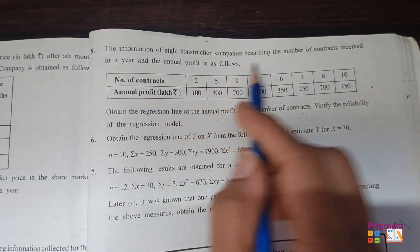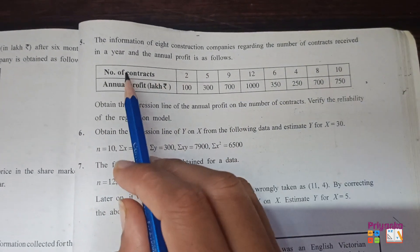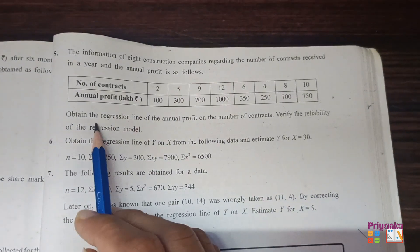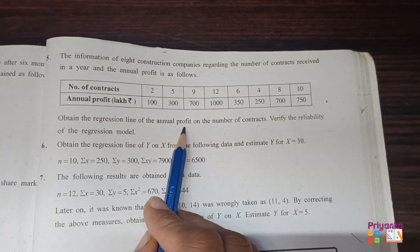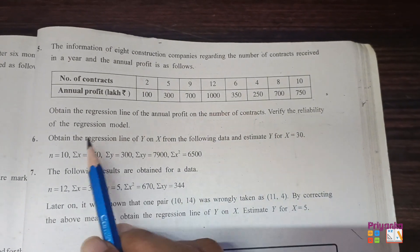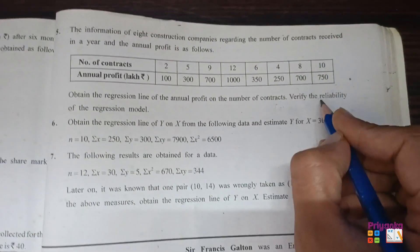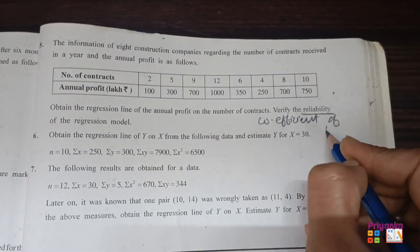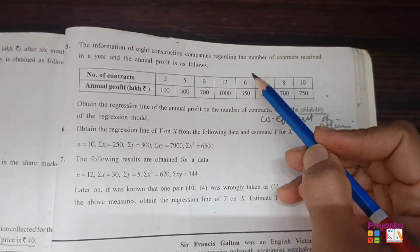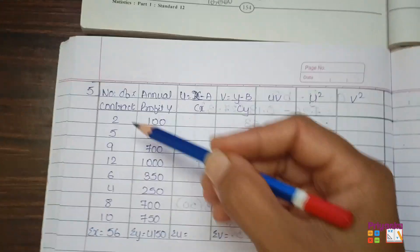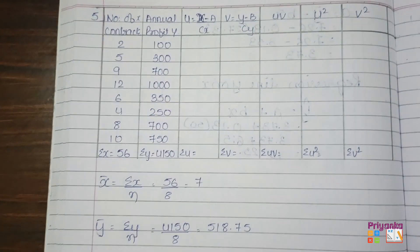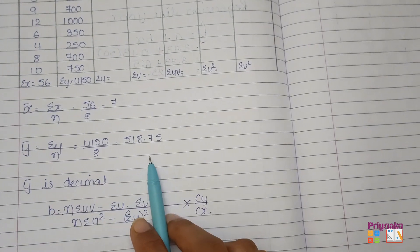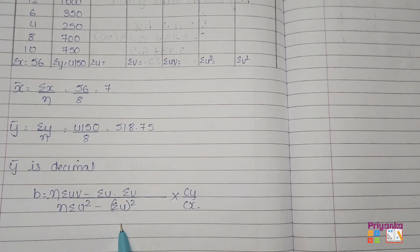Question number 5. The information of 8 construction companies regarding the number of contracts received in a year and annual profit is as follows — number of contracts and annual profit in lakh. Obtain the regression line of annual profit on number of contracts, and verify the reliability of the regression model. When they ask about reliability, they are asking for the coefficient of determination. Here we are using the UV formula.